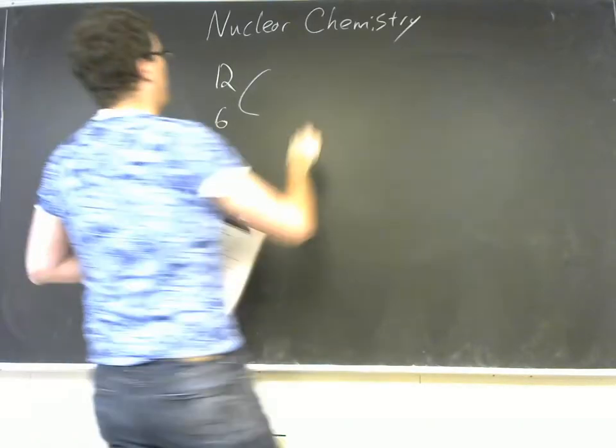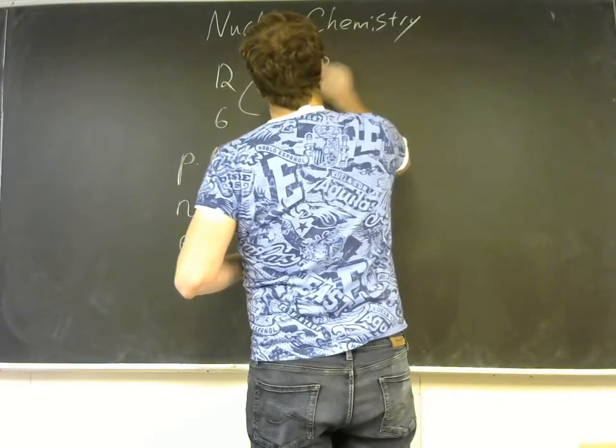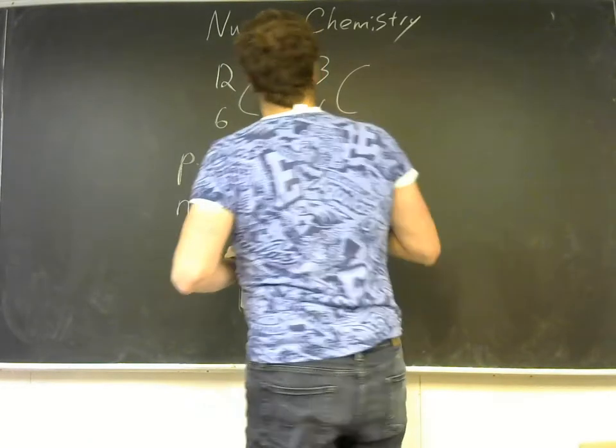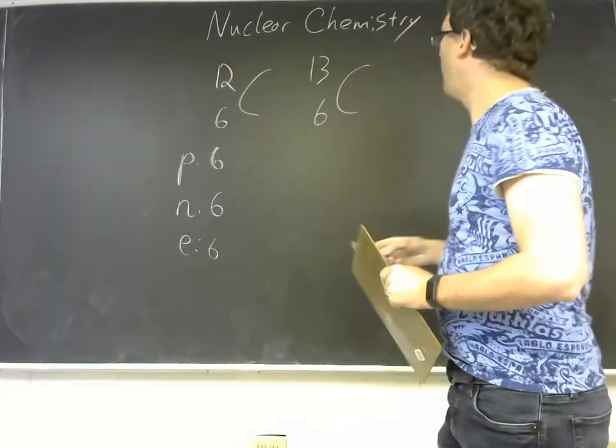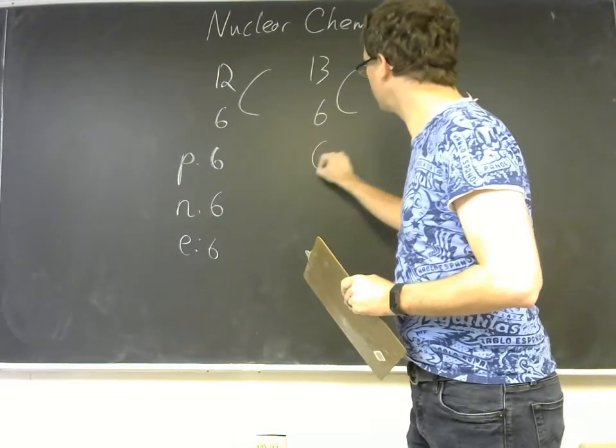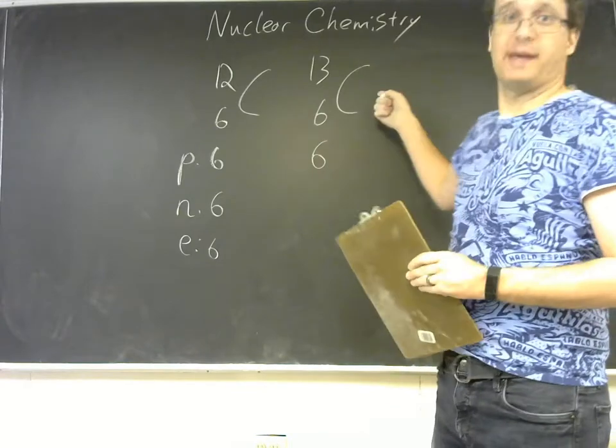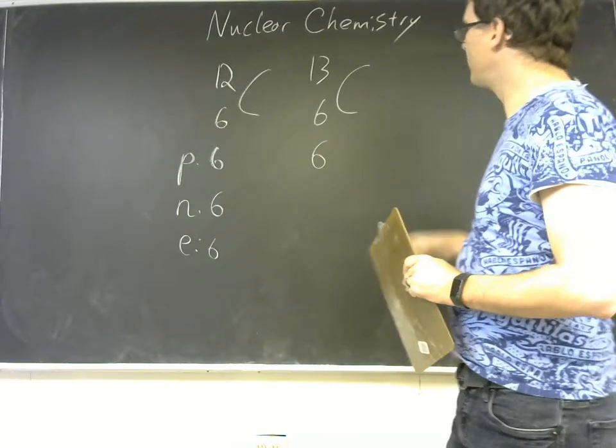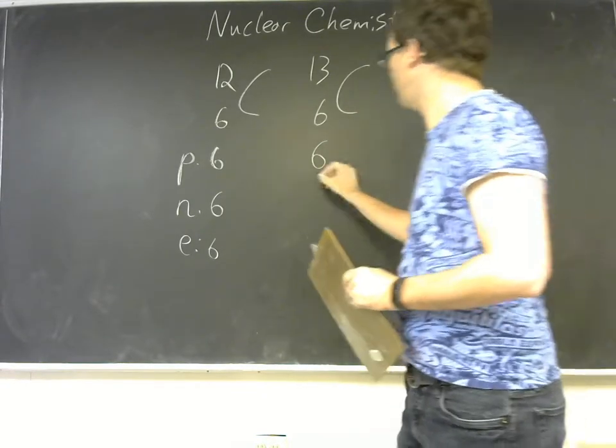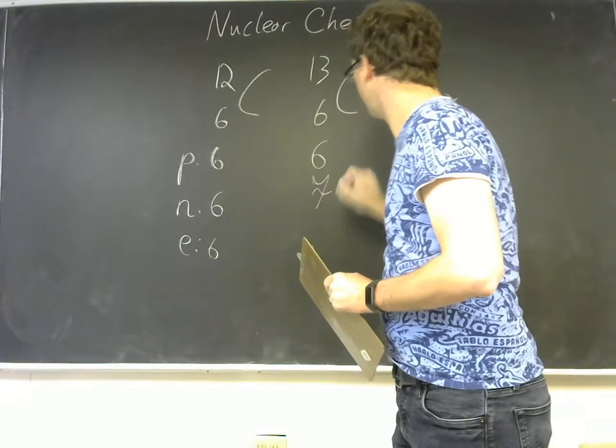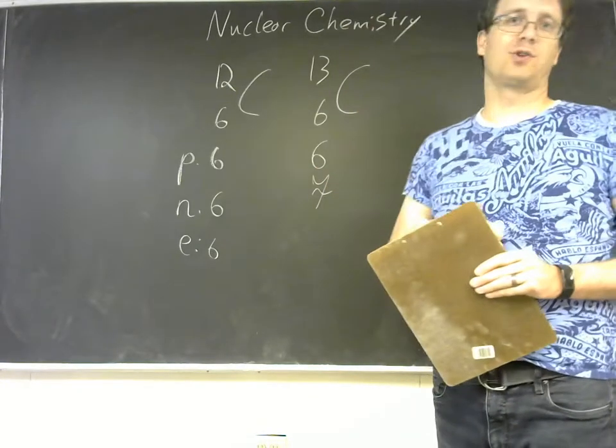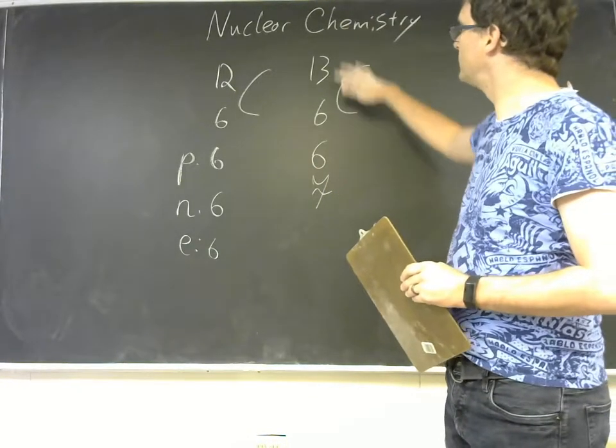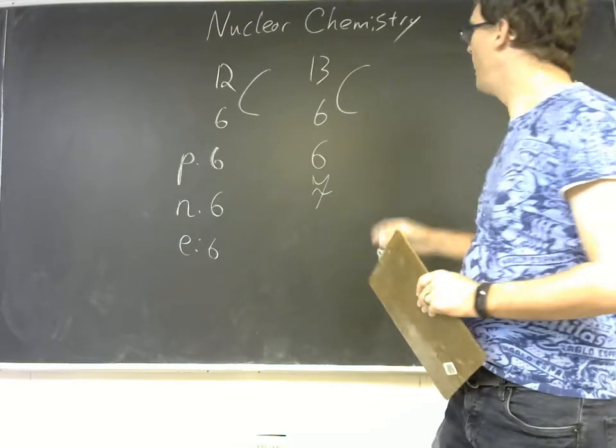And there are different isotopes of carbon. So carbon-13 here, it's still going to have 6 protons. That's what makes it a carbon. But because of that higher mass number, this isotope of carbon has 7 neutrons. The 6 plus 7 is going to equal 13. And then it's got the 6 electrons.